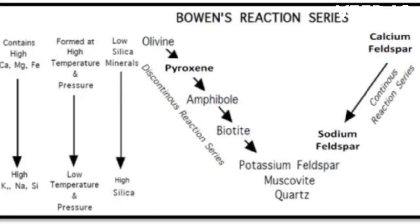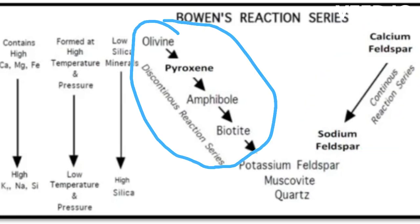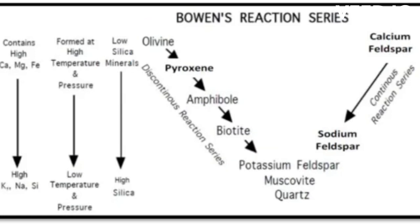Bowen suggested that the common minerals that crystallize from magmas could be divided into a continuous reaction series and a discontinuous reaction series. These two branches occur at higher temperatures associated with mafic and intermediate magmas.